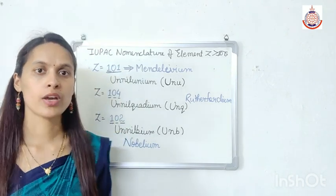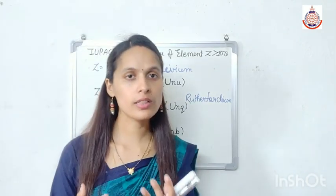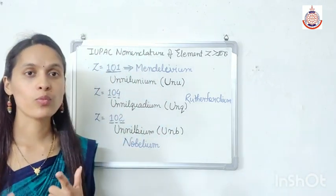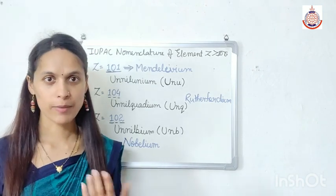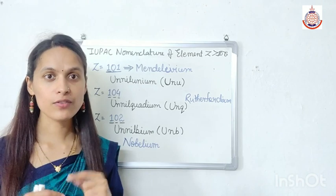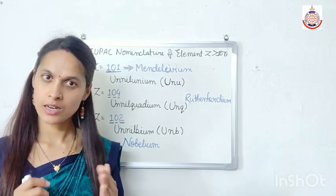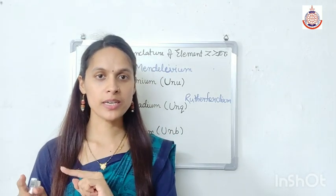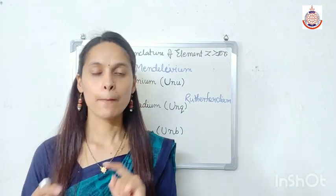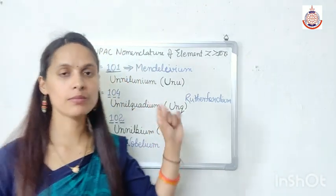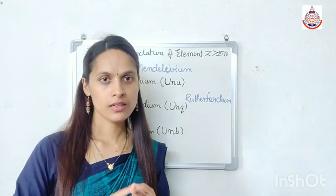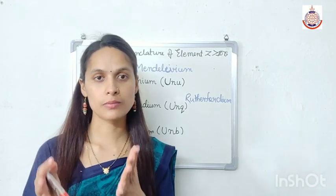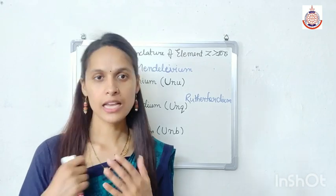Here is a homework assignment: write all the IUPAC systematic names and symbols for elements with atomic number from 105 to 120 using the root words and the suffix IUM. Send your answers in the comment box.